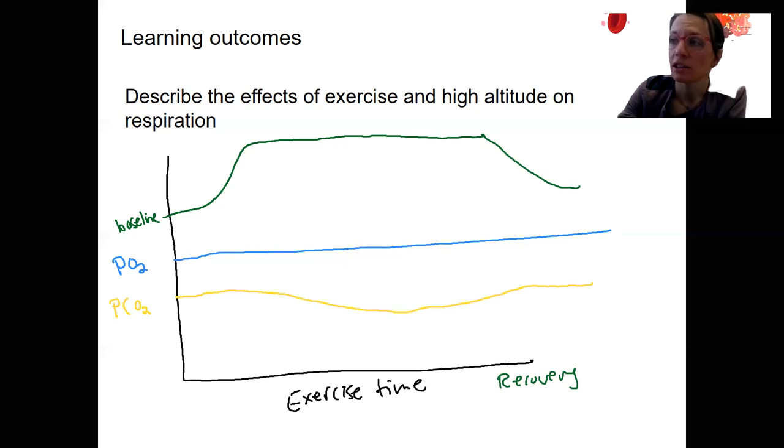And you could now guess pH. So arterial pH. pH. That's going to go slightly up and then back down.